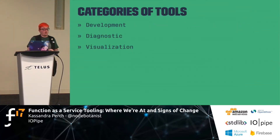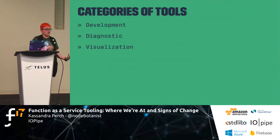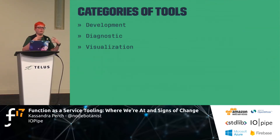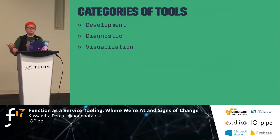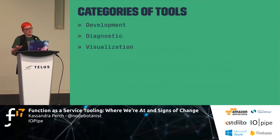I'm going to talk about three categories of tools: development tools, diagnostic tools, and visualization tools. A lot of people would lump visualization tools in with diagnostic tools. However, I've split them into their own category because diagnostic tools are more for when things go wrong, whereas visualization tools are also used when things are going great — because you still want to see your app when it's running correctly, and visualization is great at spotting problems that may become problems in the future.